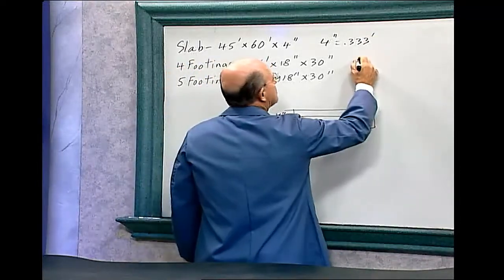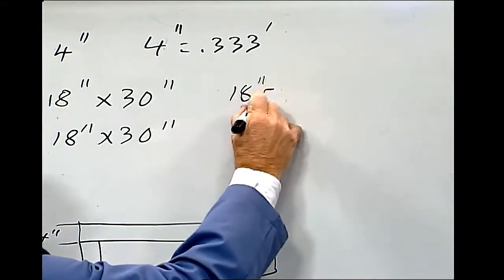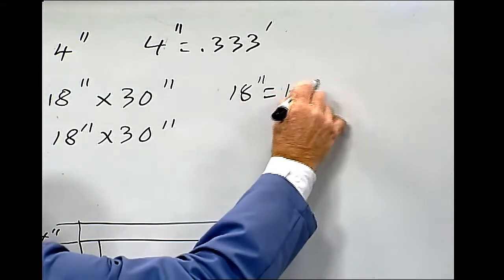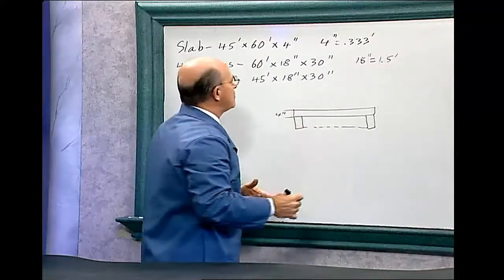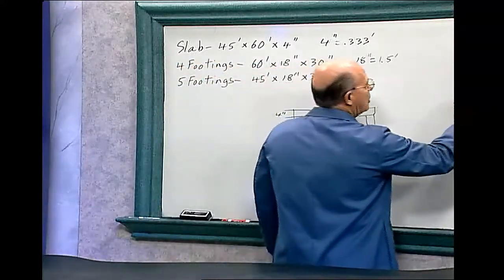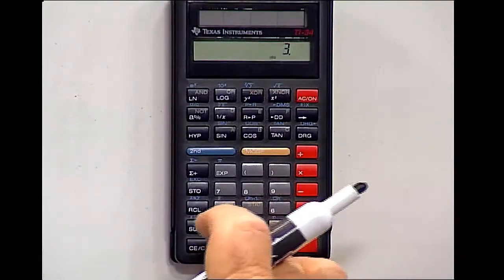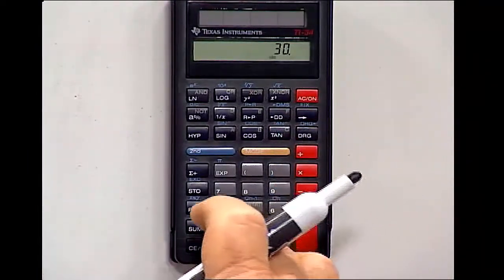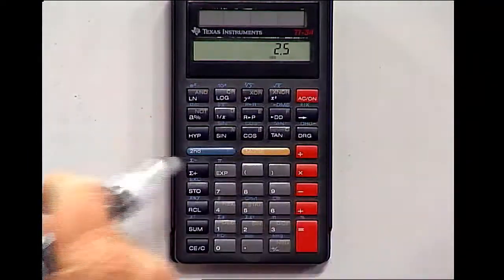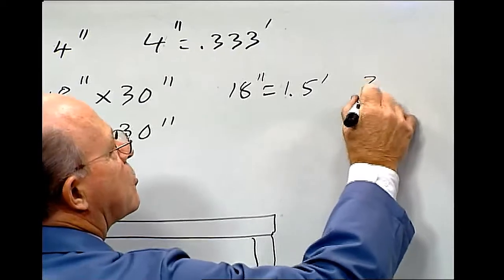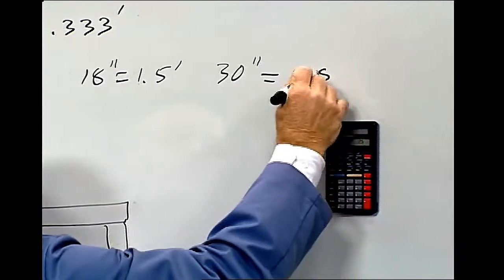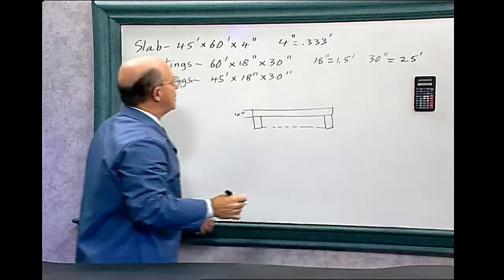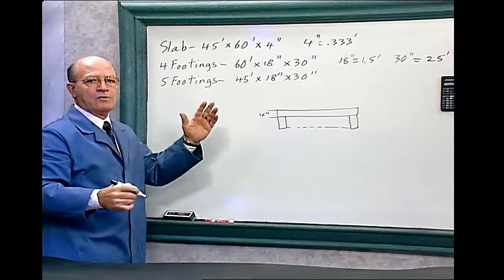18 inches equals 1.5 feet. You divide 12 into 18. And 30 divided by 12 equals 2.5. So 30 inches equals 2.5 feet. Now we have all our dimensions in feet. Now we can plug in the numbers.